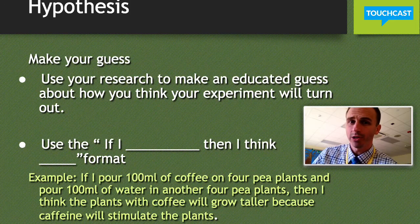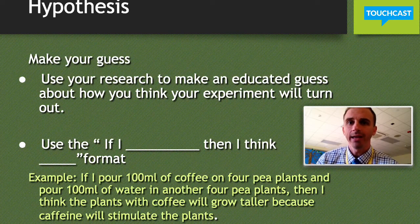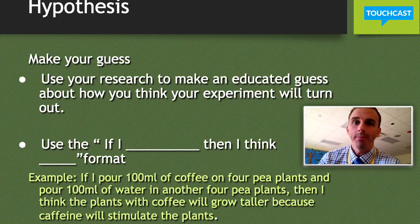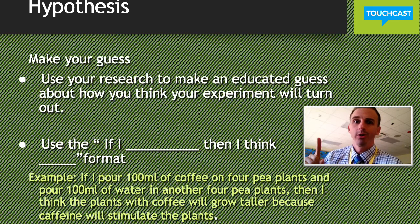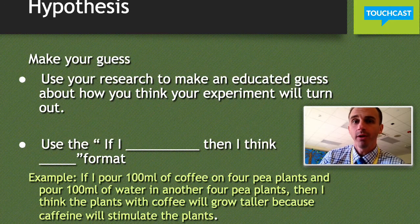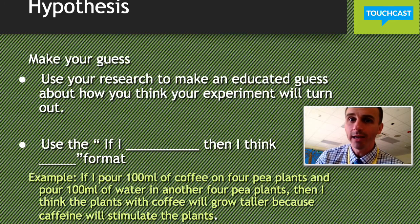If you go back to your testable question, it has that same format: if I change this, then this will happen. You're making a prediction about what you think will happen based on what you learned about caffeine and what you learned about plant growth in your research. Both of those things you researched will help you come up with a good, educated guess — not just a normal guess.